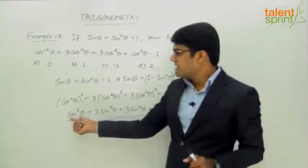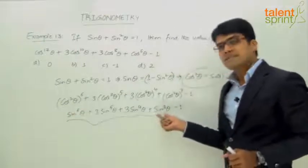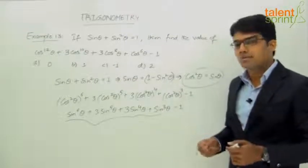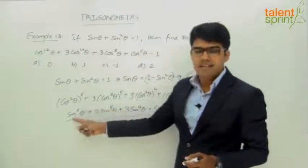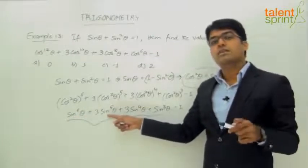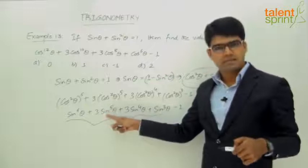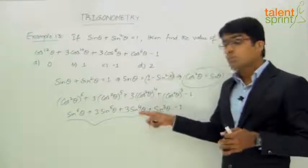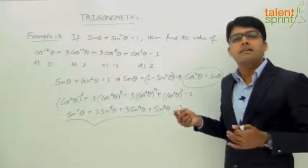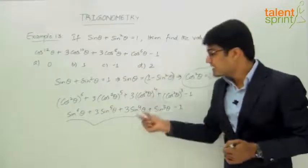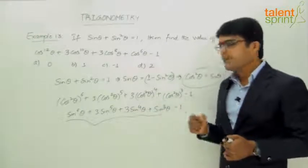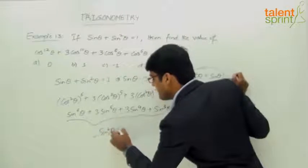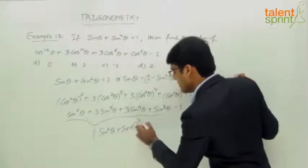If you look at it: a³ is (sin²θ)³, and b³ is (sin θ)³. So this is (sin²θ + sin θ)³. Expanding: sin⁶θ is a³, plus 3a²b gives 3·sin⁴θ·sin θ = 3sin⁵θ, plus 3ab² gives 3·sin²θ·sin²θ = 3sin⁴θ, and finally b³ = sin³θ. The complete expression reduces to (sin²θ + sin θ)³ - 1.